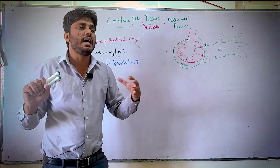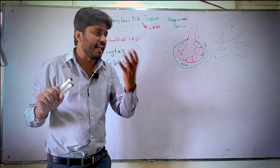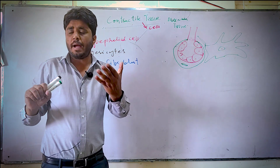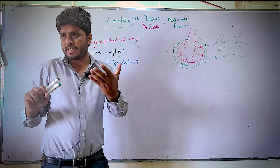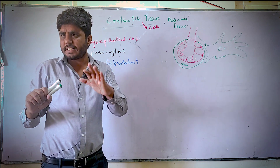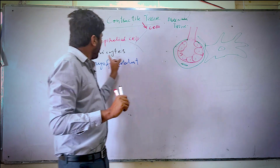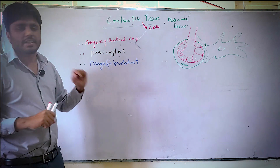We call them myoepithelial cells because they are not 100% muscular cells and not 100% epithelial cells — they show both characters. They are mostly found in mammary glands and other epithelial glands.